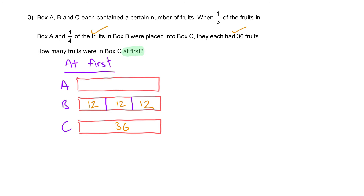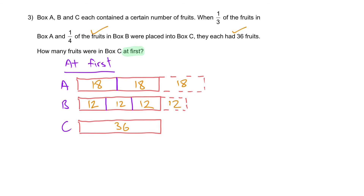For box A: one third was given to C, so what remains is two thirds — just two units. Each unit here is 36 divided by 2 equals 18. We can draw the missing one third for A and the missing quarter for B that were both given to C.